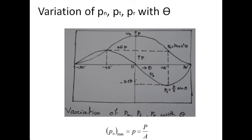Similarly, at the cross-section where theta is 0, the tangential stress will also be 0. On the longitudinal section where theta is plus or minus 90, the tangential stress will also be 0. The maximum positive value of tangential stress Pt is obtained at theta equals minus 45, as seen in the figure.